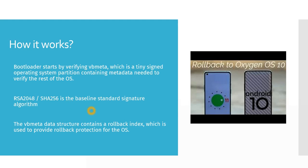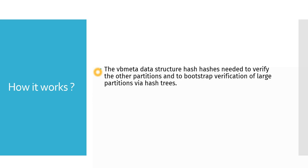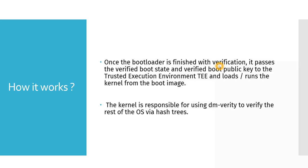Verified boot also has an additional check for the rollback index, so the VB metadata structure will contain the rollback index information. The bootloader first verifies VB meta, and VB meta will tell us if we are trying to flash the correct OS or if some attacker is trying to corrupt the device by flashing a wrong operating system. The VB meta data structure contains hashes needed to verify other partitions and verify signatures with those partitions. Once the bootloader finishes verification, it passes the verified boot state and verified boot public key to the trusted environment, which will run the kernel from the boot image.